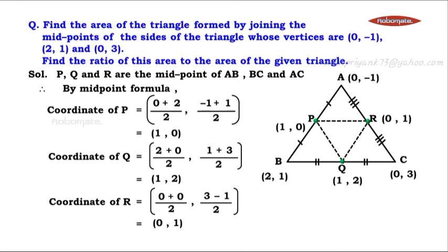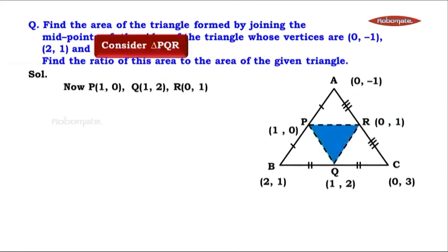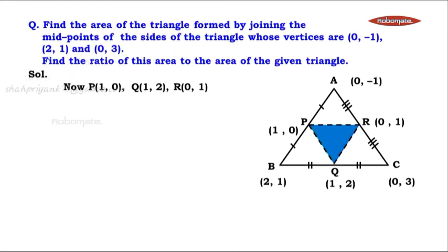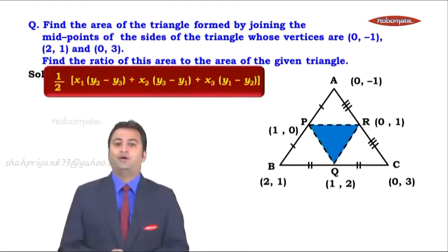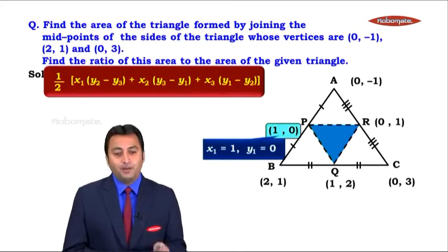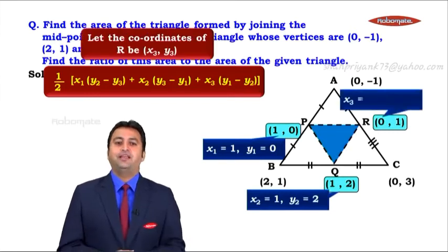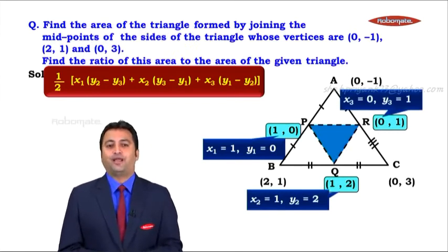Now we have calculated P = (1, 0), Q = (1, 2), and R = (0, 1). The question is to calculate the area of triangle PQR. So let us consider triangle PQR where point P is x1, y1; point Q is x2, y2; and point R is x3, y3. We have the coordinates and the formula for area of a triangle, so let us now show the working.